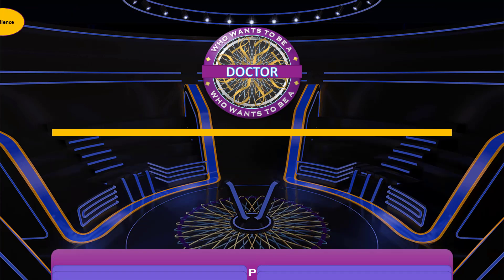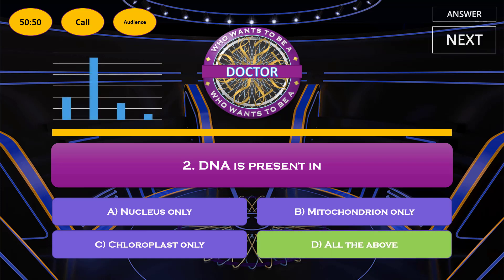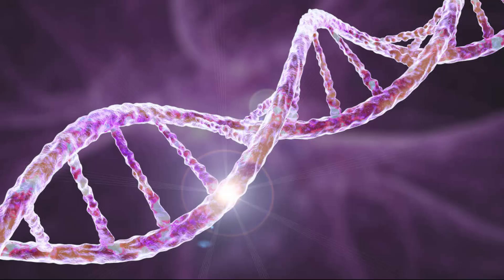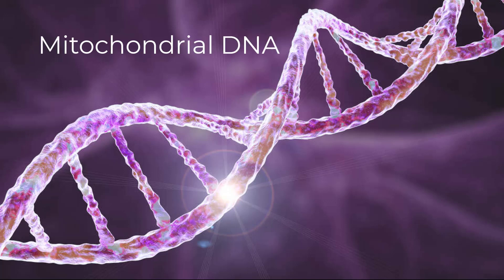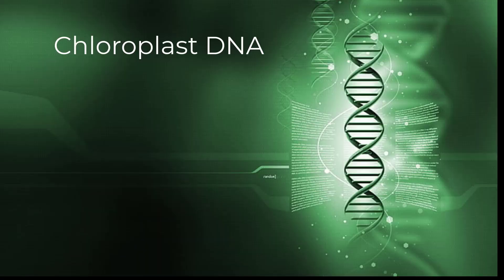Moving on to question number 2: DNA is present in — option A: nucleus only; option B: mitochondria only; option C: chloroplast only; option D: all the above. The correct answer is option D, all the above. Most DNA is located in the cell nucleus, called nuclear DNA. But a small amount of DNA can also be found in mitochondria, called mitochondrial DNA — mitochondria convert energy from food into a form cells can use. Similarly, chloroplast DNA contains genes involved in photosynthesis and other chloroplast activities.